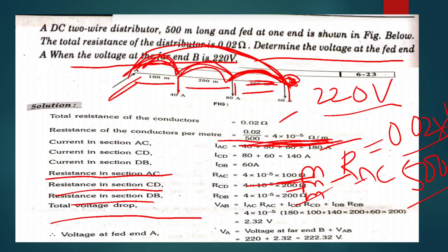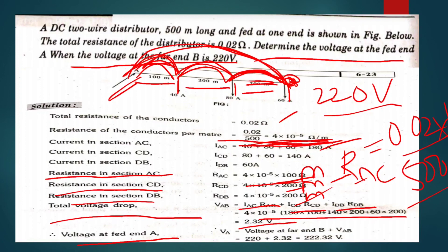Calculating VAC, VAC = IAC × RAC; VCD = ICD × RCD; VDB = IDB × RDB. Adding all voltage drops gives the total VAB. The total voltage at fed point A is VA = VB + VAB = 220 + 2.32 = 222.32 volts. Thank you.